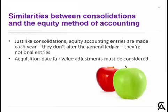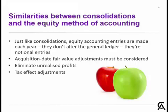With equity accounting, just like in consolidations, we have to make acquisition date fair value adjustments — there might be ongoing impacts with those fair value adjustments. Also, we have to eliminate unrealised profits, whether they're from the associate going up to the investor or from the investor going down. And as soon as we start changing profits, we have to think about tax effect adjustments. Dividends paid by the joint venture or the associate also have to be eliminated.